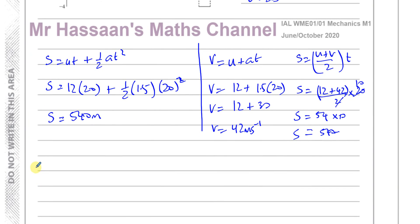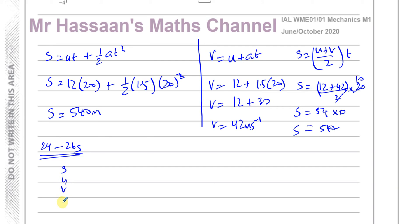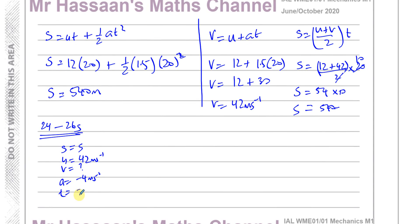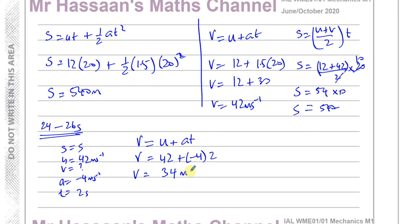For the section between 24 and 26 seconds, using SUVAT again: u equals 42 metres per second, acceleration is negative 4 metres per second squared, and time is 2 seconds. Finding the final velocity: v equals 42 plus (negative 4) times 2 equals 42 minus 8 equals 34 metres per second. The car is decelerating, so its speed is decreasing.